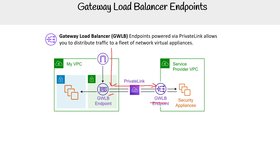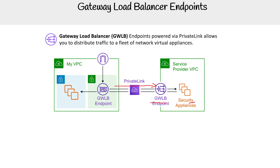Traffic then goes to your virtual appliances — commonly security appliances. The idea is that traffic flows back and then goes to your workload, so you're adding a layer of security or filtering before traffic reaches your resources.